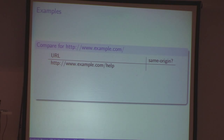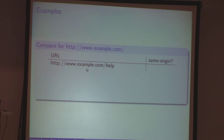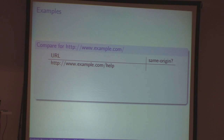Here's a small interactive part where we walk through examples of how to compare the origins of two URIs to see if they are the same origin. We'll always compare against HTTP www.example.com. The first URI we're comparing to is also HTTP www.example.com. Everybody's nodding — that's correct, it is the same origin.